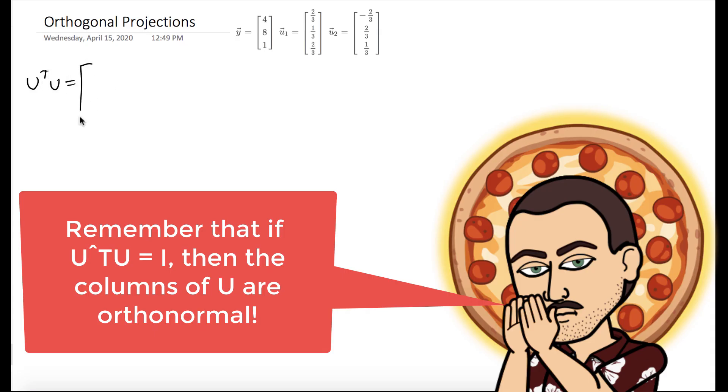We'll start by evaluating the product U^T times U, where U is the matrix formed by u1 and u2 as columns. When we do this multiplication out, we get the identity matrix. This is the identity matrix, and we had a theorem that said if U^T times U equals the identity matrix,